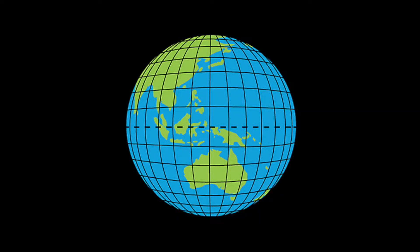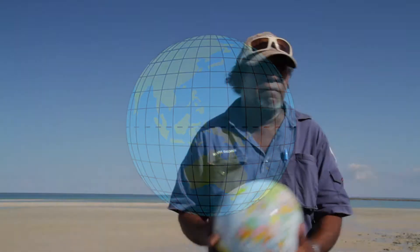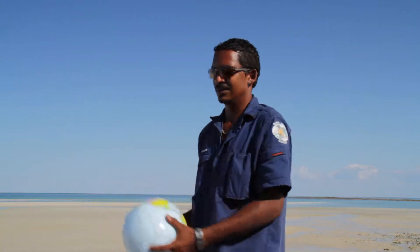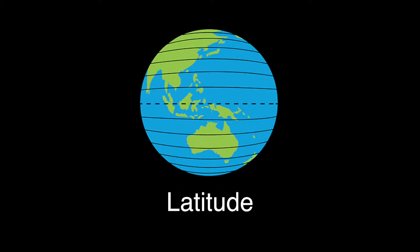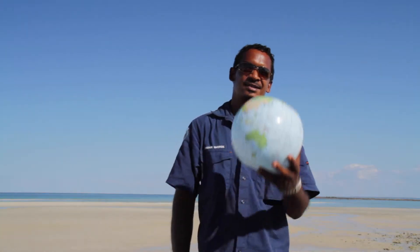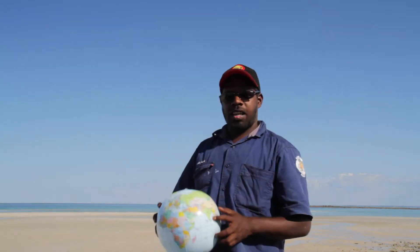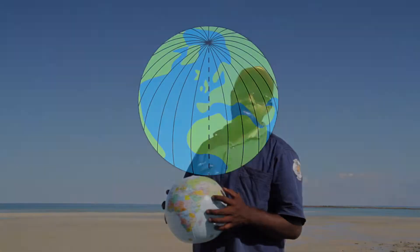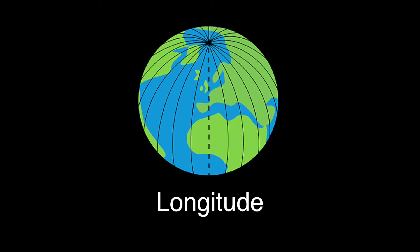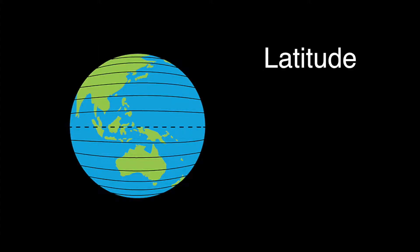Lines of latitude and longitude circle the globe. Latitude runs crossways, and lines of longitude run up and down. When we're recording our location we use longitude and latitude. We use them to work out where we are on the ocean, or anywhere on the earth's surface we can work out.